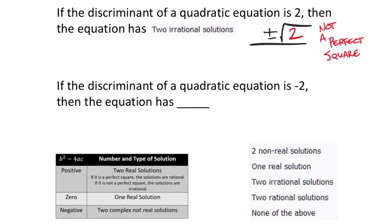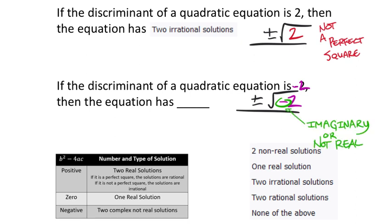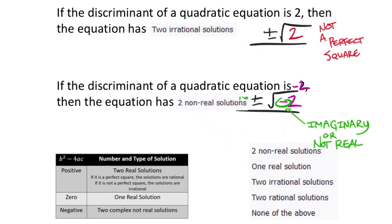On the next one, in the quadratic formula you'd have plus or minus the square root of negative 2. Since it's the square root of a negative, that negative tells us it's an imaginary value. So imaginary — not real — which means the only option here is two non-real solutions.